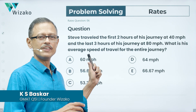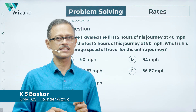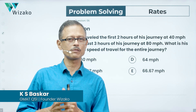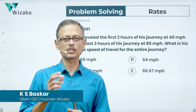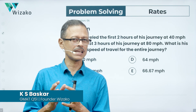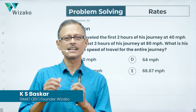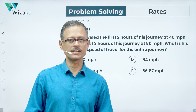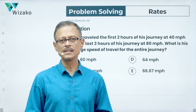Hi everyone. This is a very easy question. This is the GMAT quantitative reasoning practice question from the topic rates, speed, distance, time, and within that, computing the average speed is the concept tested in this question.